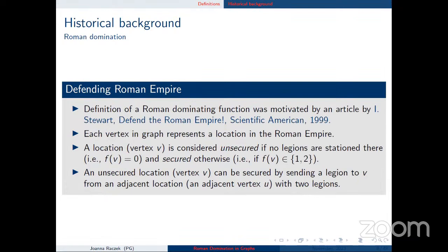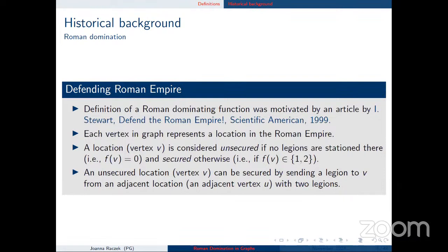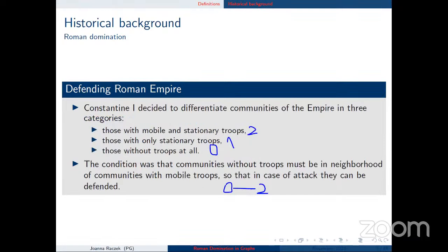This connection wasn't immediately obvious. The guys who defined the Roman dominating function didn't read history books, but the famous mathematician Ian Stewart did. He wrote a paper in 1999 called 'Defend the Roman Empire,' published in Scientific American. When researchers in domination theory read that paper, they decided to formally define the Roman domination number and Roman dominating function.